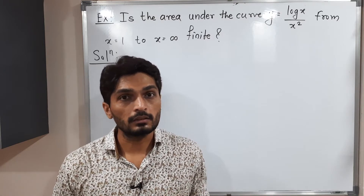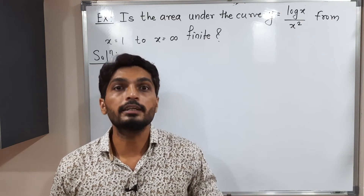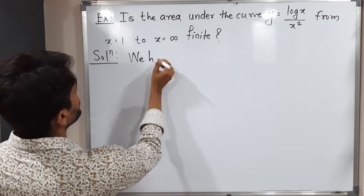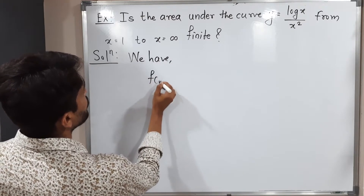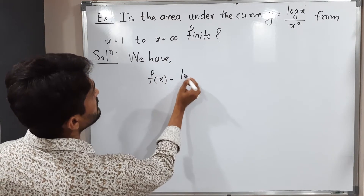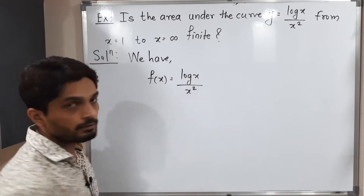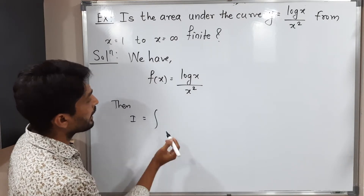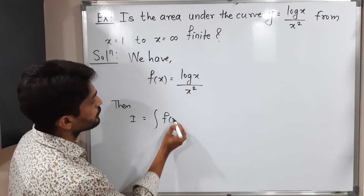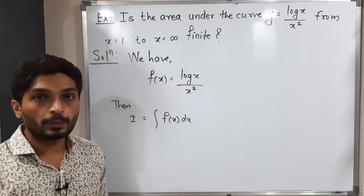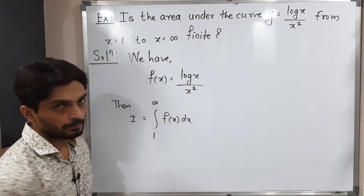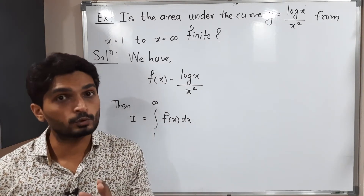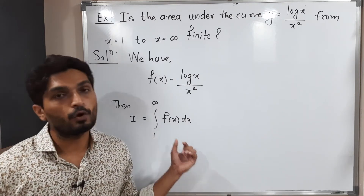Area under the curve is nothing but integration. So we have f(x) = log(x) / x², which is the given function. The area under the curve means integration of f(x) dx from 1 to infinity. They are asking whether it has a finite value or infinite value.